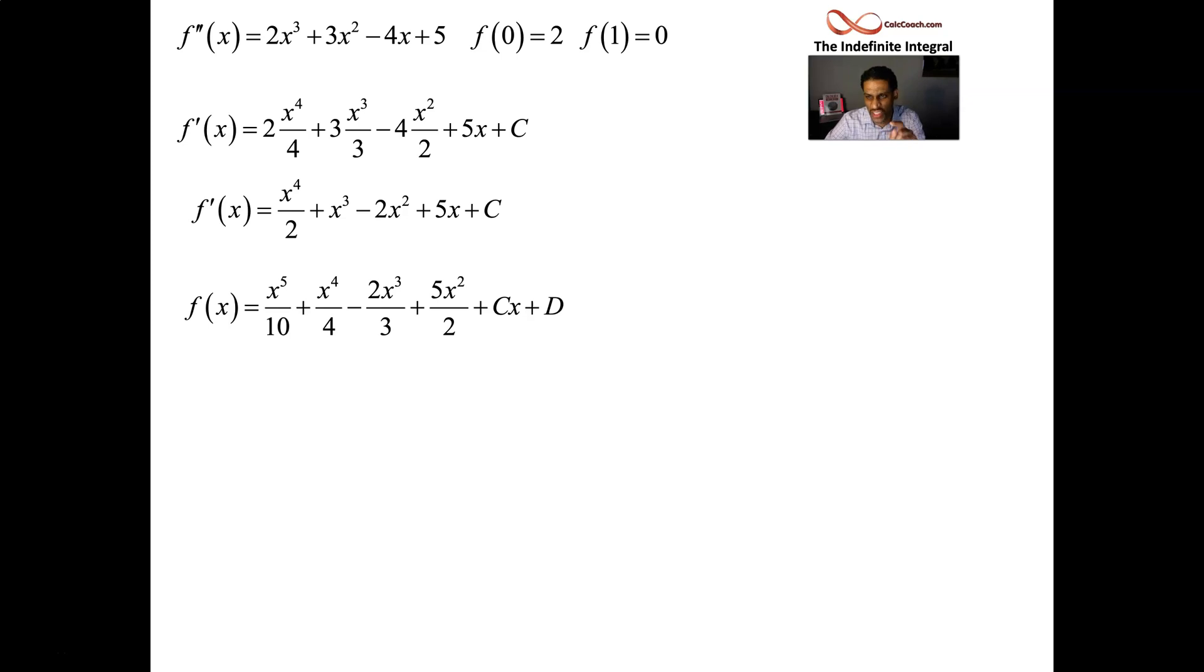Now we have two points that this function goes through. Generally in these types of problems, you'll have a derivative value and a function value. But in this question, we have two function values. Let's plug them in. So we plug a 0 in. We should get a 2 out. In a polynomial, when you plug a 0 in, what you get out is the constant term.